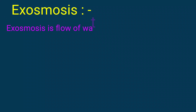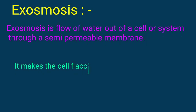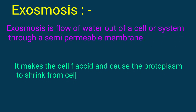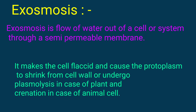Exosmosis is the flow of water out of a cell or a system through a semi-permeable membrane. It makes the cell flaccid and causes the protoplasm to shrink from the cell wall, undergoing plasmolysis in the case of plant cells and crenation in the case of animal cells.